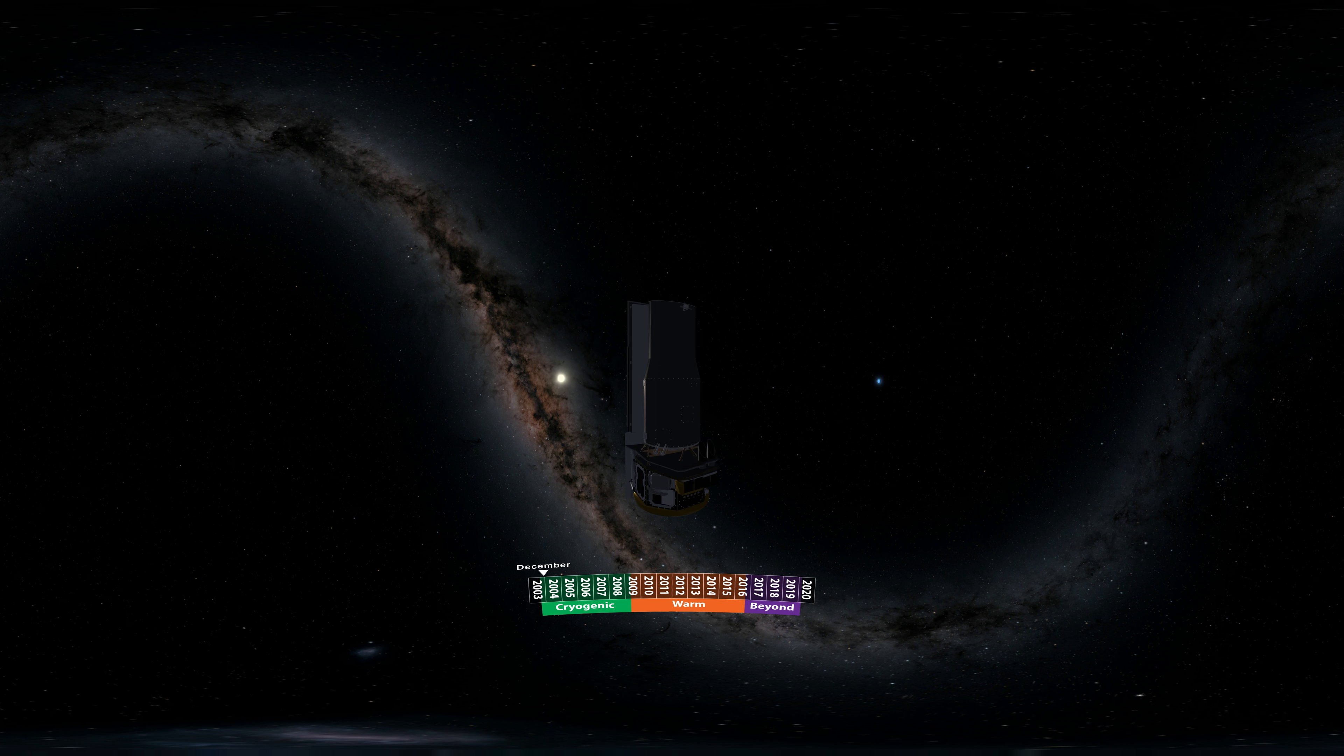Our simulated journey with Spitzer begins a few months after its launch in late 2003. You can see the calendar date of the simulation below the telescope. As we follow Spitzer in its orbit around the sun, we will see the sun drift across the background stars.